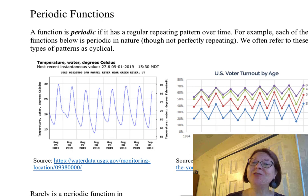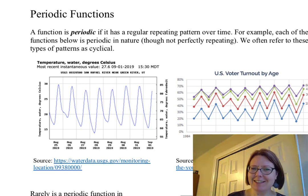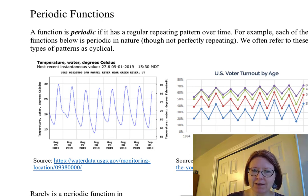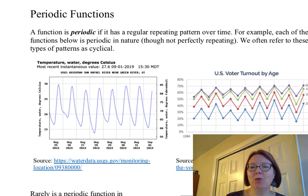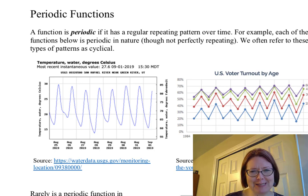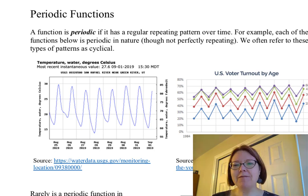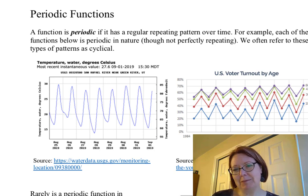In this video, I want to introduce you to periodic functions. A function is said to be periodic if it has a regular repeating pattern over time. For example, the functions shown below are periodic in nature, though not perfectly repeating. In the real world, we very rarely see a perfectly repeating graph. We often refer to these types of patterns as cyclical or periodic.